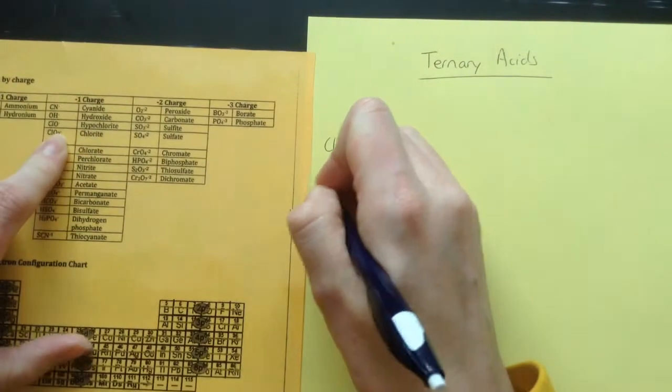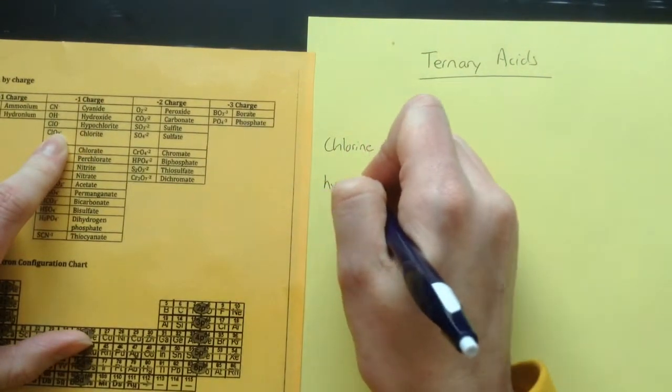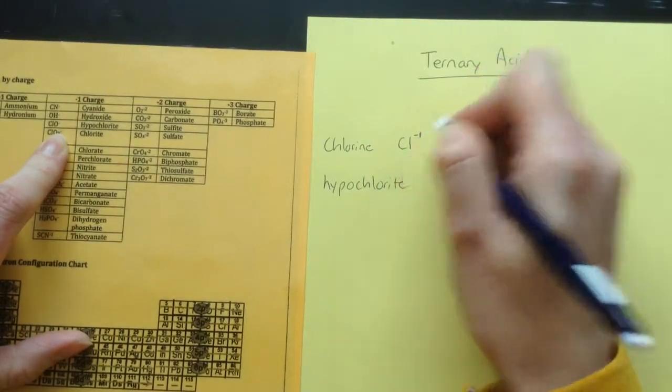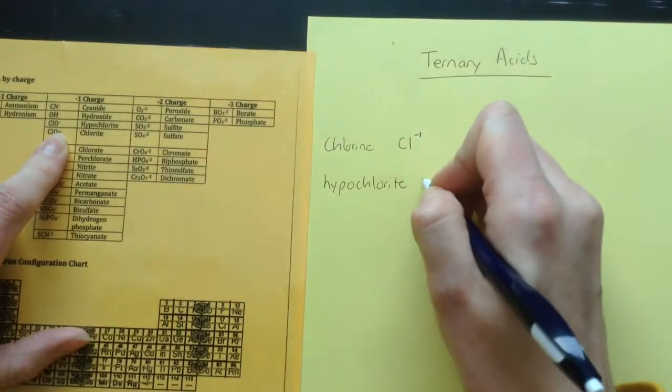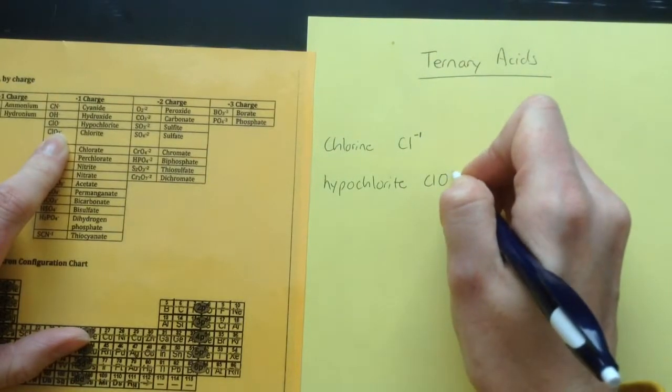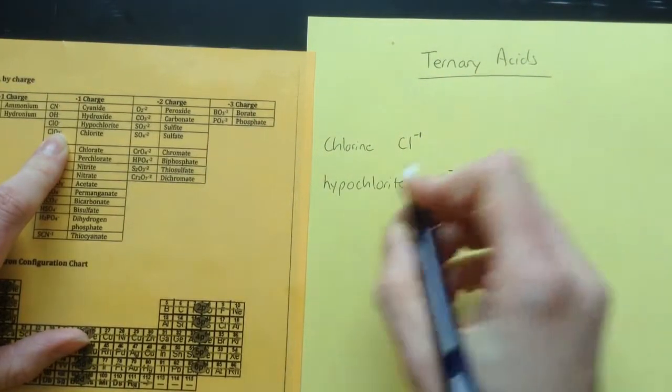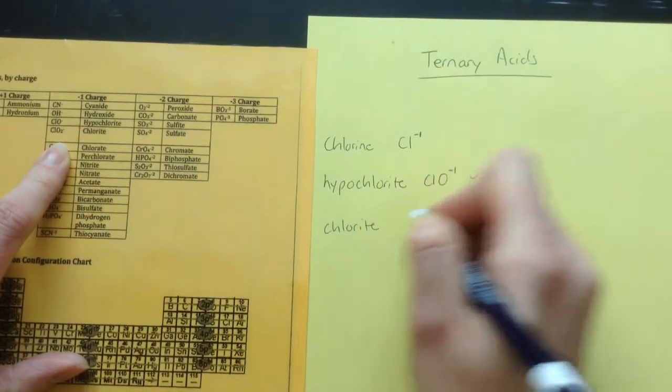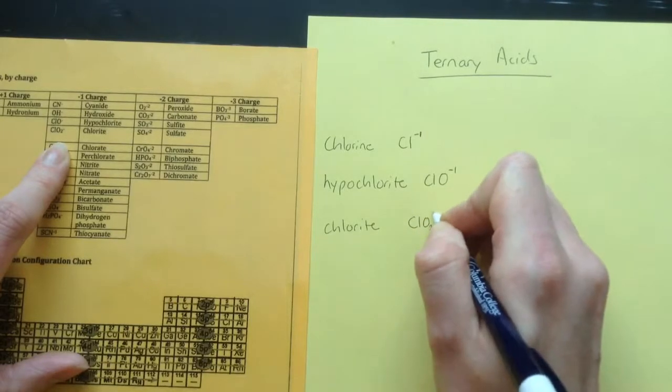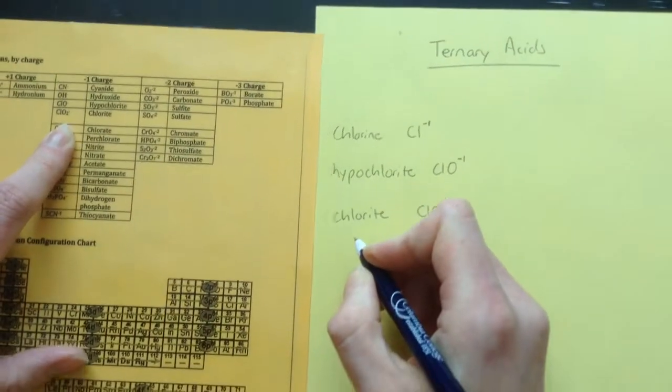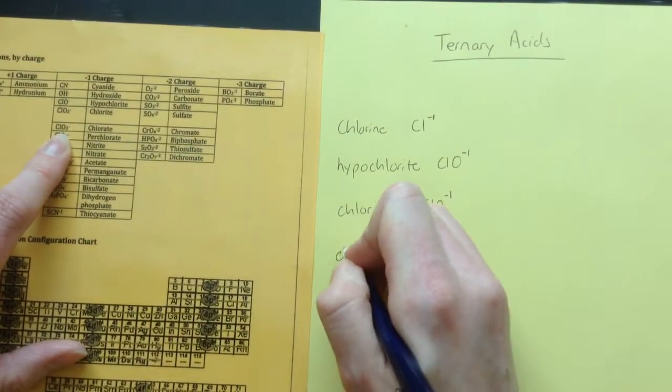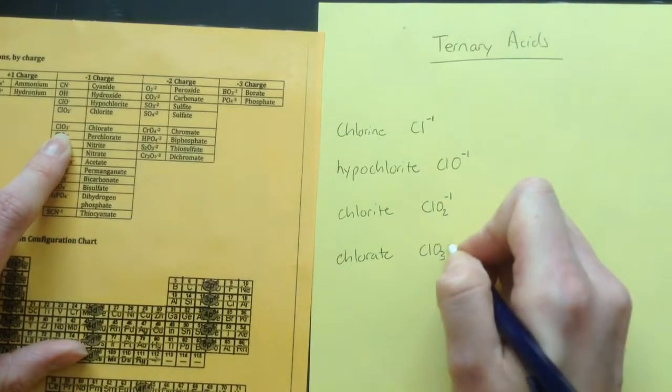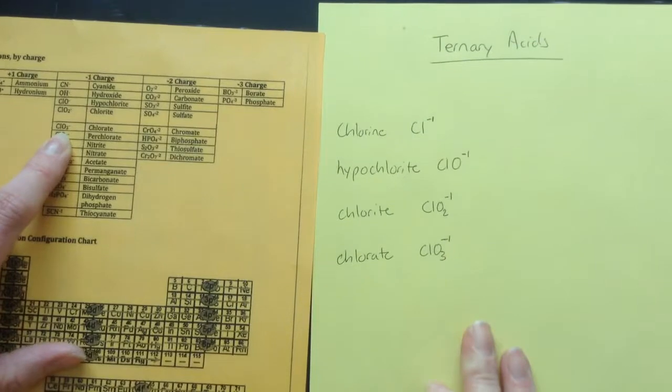First we get hypochlorite, and hypochlorite, when by itself chlorine has a minus one charge, when you stick an oxygen on it it still has a minus one charge, so it's ClO with a minus one charge. Then there's chlorite, as opposed to hypochlorite, which is ClO2, which also has a minus one charge, and then there's chlorate, which also has a minus one charge, it's ClO3.